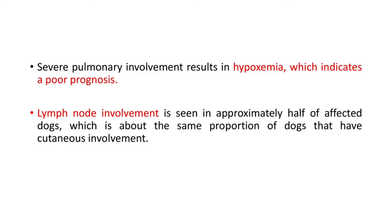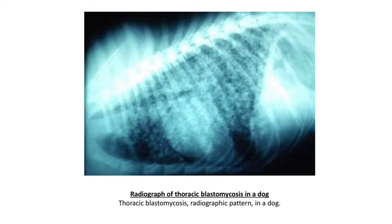Severe pulmonary involvement results in hypoxemia, which indicates a poor prognosis. Lymph node involvement is seen in approximately half of the affected dogs, which is about the same proportion of dogs that have cutaneous involvement. So in dogs, the systems mainly affected are the respiratory system, the skin, and there is also lymph node involvement. Here is a radiograph of thoracic blastomycosis in a dog showing the radiographic pattern.